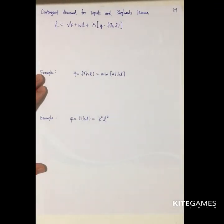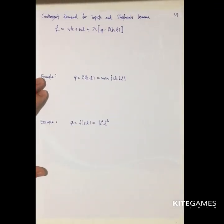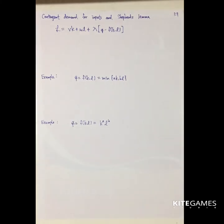Next we will talk about the contingent demand for input and the Shephard's Lemma. Contingent demand is just the demand for labor and capital given the output level unchanging. This is similar to the compensated demand in utility maximization.